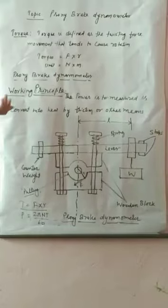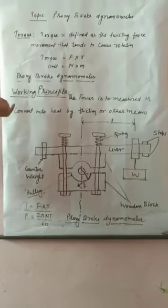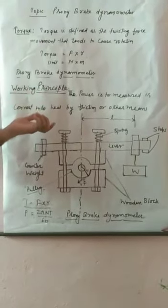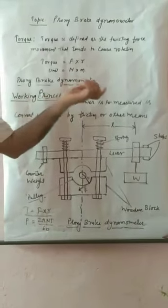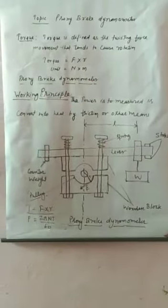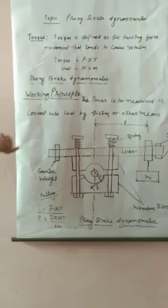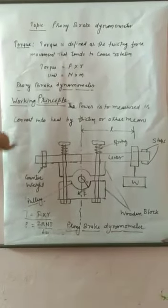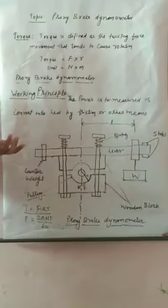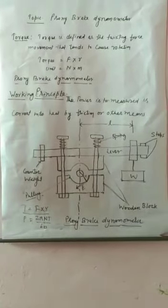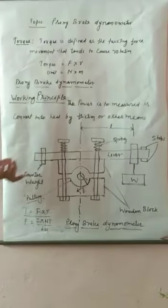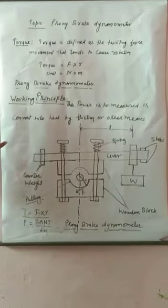Now we discuss the working principle of the Prony brake dynamometer. The working principle is very simple: the power to be measured is converted into heat by means of friction or by any other means. The Prony brake dynamometer works on the principle of brakes and friction.